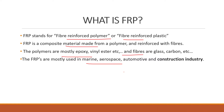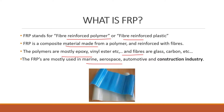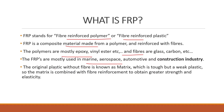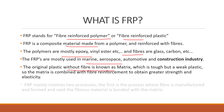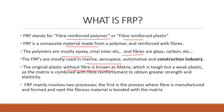FRP is mostly used in the marine, aerospace, automotive, and construction industries. In this video we are only focusing on FRP roofing sheets. The original plastic without fiber is known as matrix, which is tough but a weak plastic. The matrix is combined with fiber reinforcement to obtain greater strength and elasticity. FRP mainly involves two processes: first, the fiber is manufactured and formed; next, the fibrous material is bonded with the matrix.